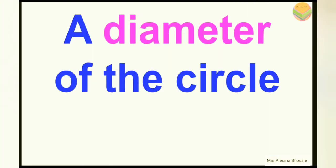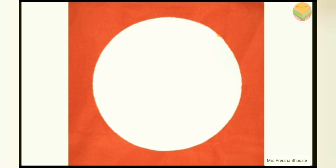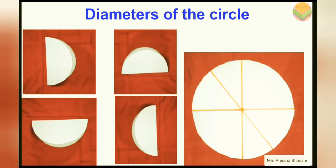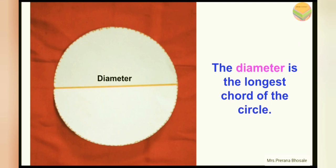Now let's see what is a diameter of the circle. For this, again you have to take one more circular shape. Now fold this circular shape to divide it into two halves or two equal parts. Open it and trace the line of the fold with a pencil. This line is called a diameter of the circle. If you fold like this to divide the circular shape into two equal parts, you will get an infinite number of diameters of the same length. And students, you should keep in mind that the diameter is the longest chord of the circle.